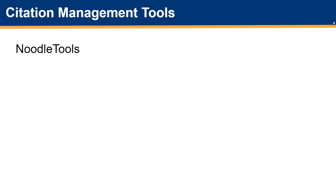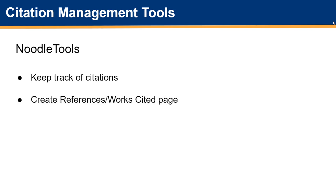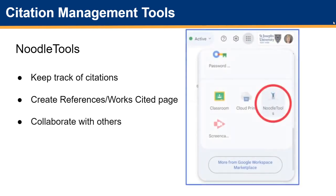There are many tools available that you can use to assist you in managing your citations, but the library recommends using a product that we subscribe to called Noodle Tools. You can use Noodle Tools to enter and keep track of your citations, to create your references or works cited page, and to collaborate with your instructor and other students. You can find Noodle Tools conveniently located under the Google Apps menu. Additional details about using Noodle Tools are covered in another video — please look for the link in the description section below.